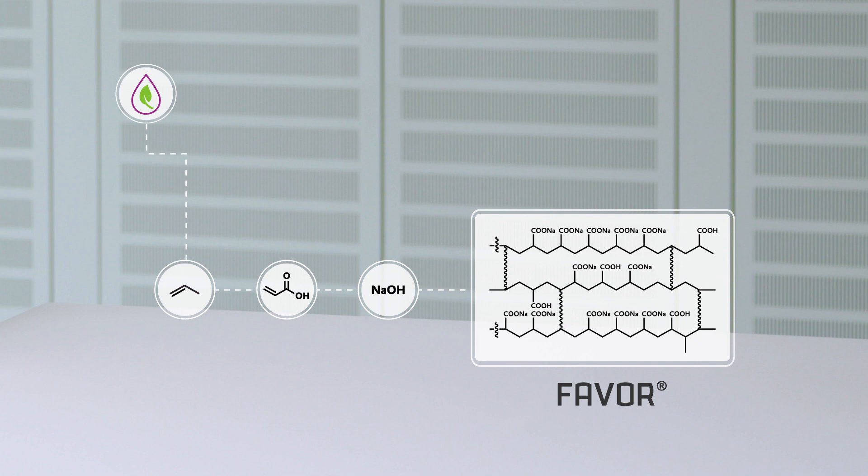By using biobased or biocircular propylene and other raw materials in our production process, we can reduce the usage of fossil-based raw materials by up to 100%. In addition, we can further reduce our carbon dioxide footprint by using renewable energy and raw materials produced with it, such as caustic soda.